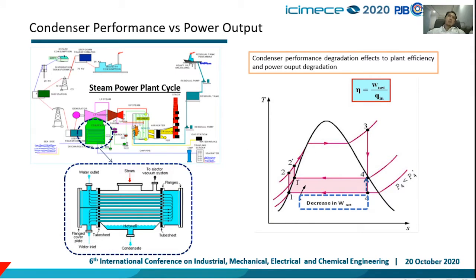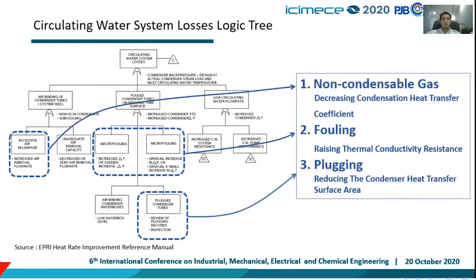A condenser is one of the main equipment in a steam power plant that functions to condense turbine exhaust steam using a cooling medium in the form of circulating water from seawater or river water. Condenser performance degradation affects plant efficiency and power output. There are several factors that can cause condenser performance degradation; three of them are Non-Condensable Gas, Fouling, and Plugging.